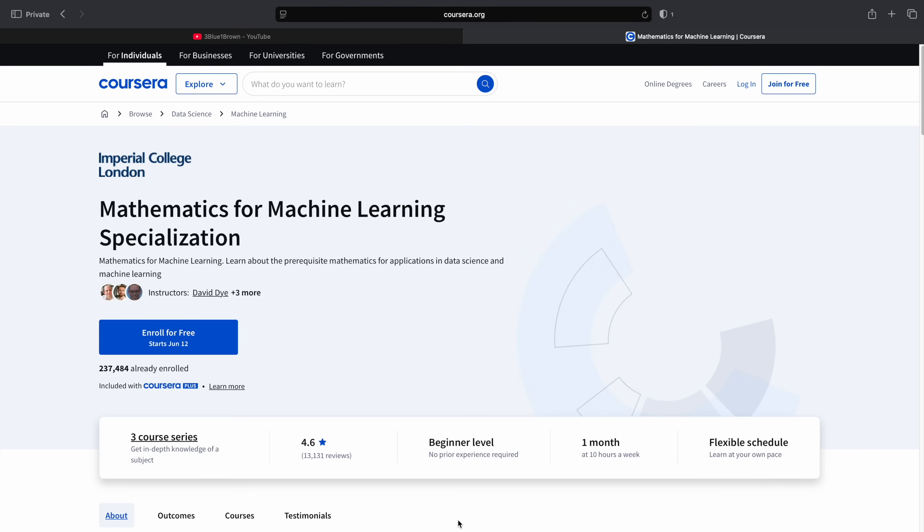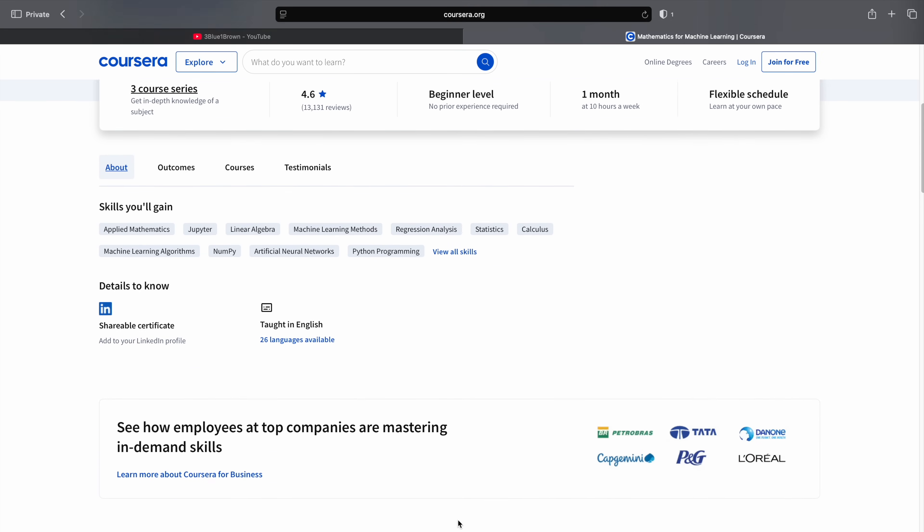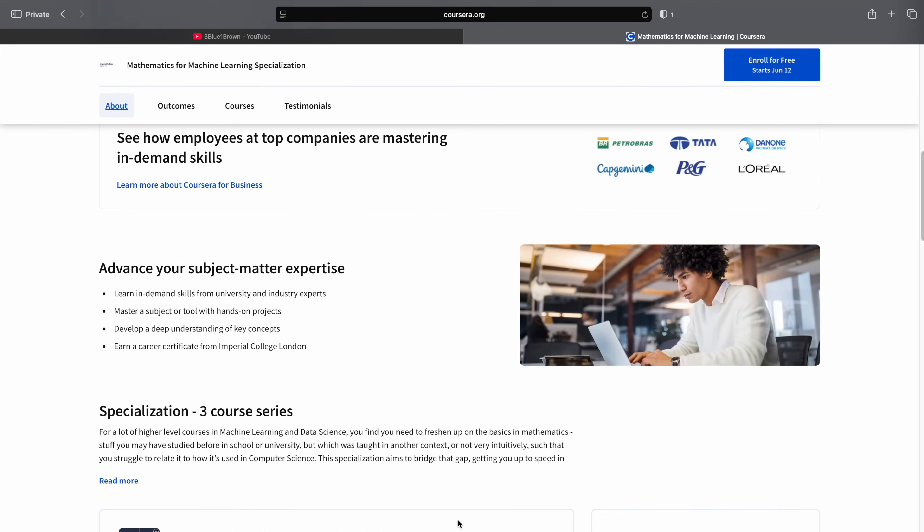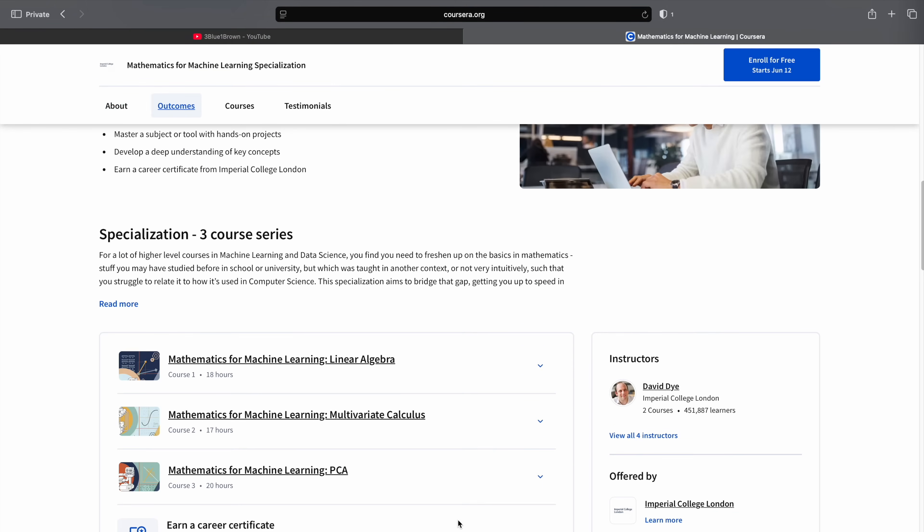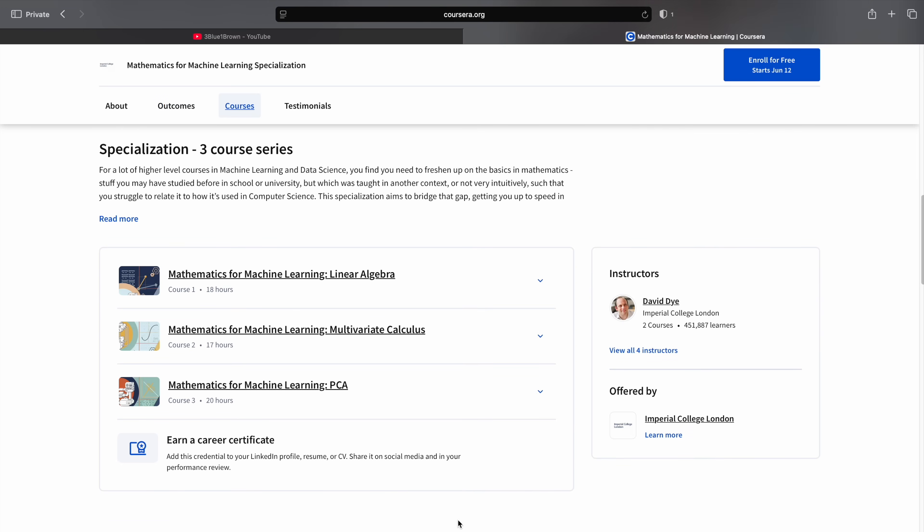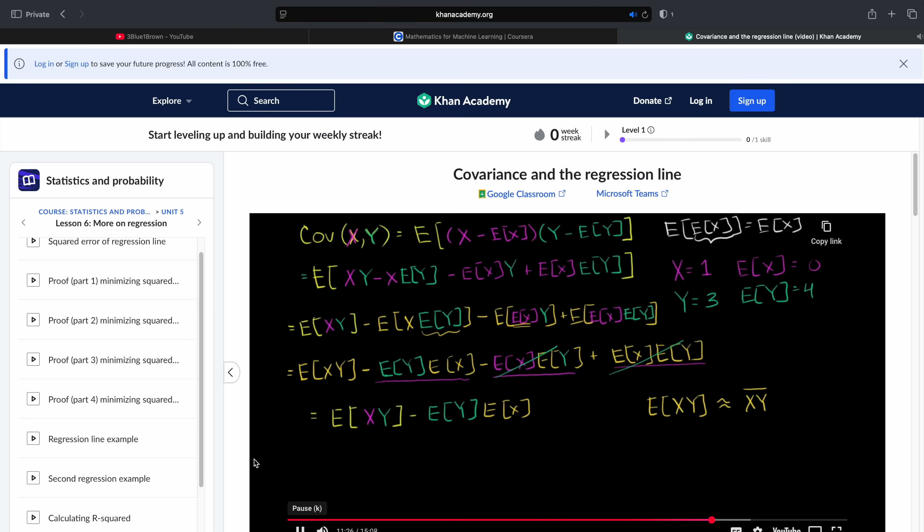After that, I moved on to the Mathematics for Machine Learning specialization by Imperial College London on Coursera. It covers both linear algebra and multivariable calculus and it's taught in a really practical, clear way. That said, it doesn't go into statistics or probability, so to fill that gap in, I turned to Khan Academy's series on this.